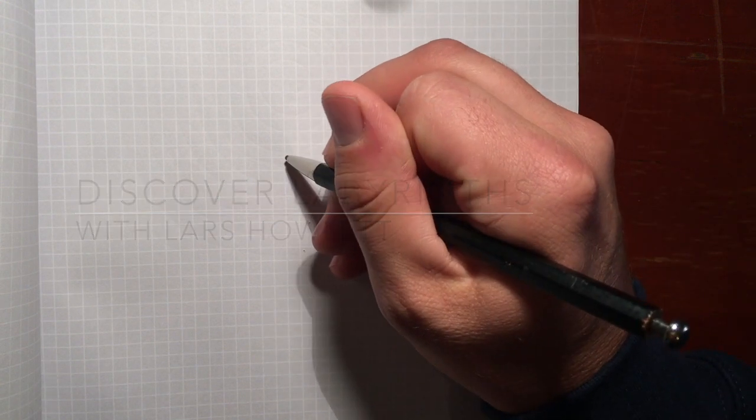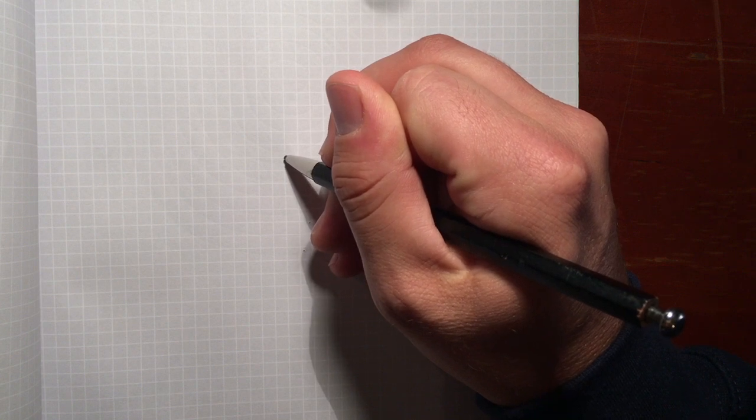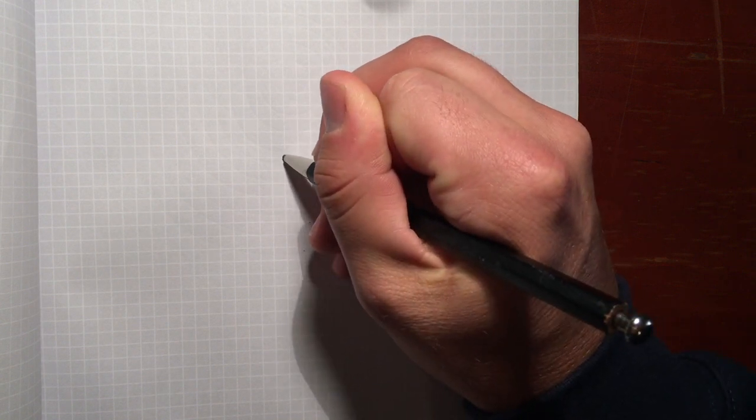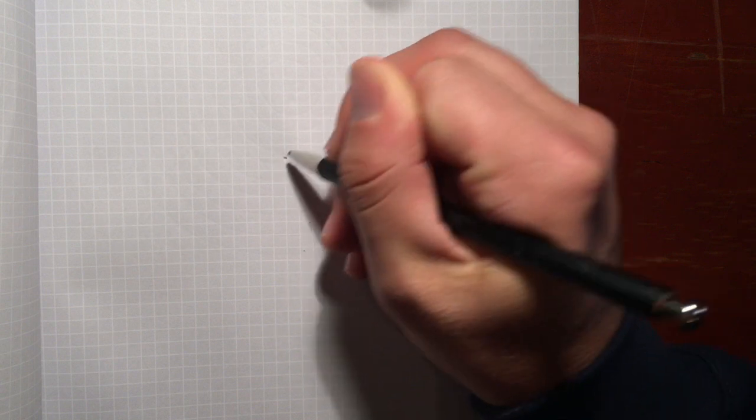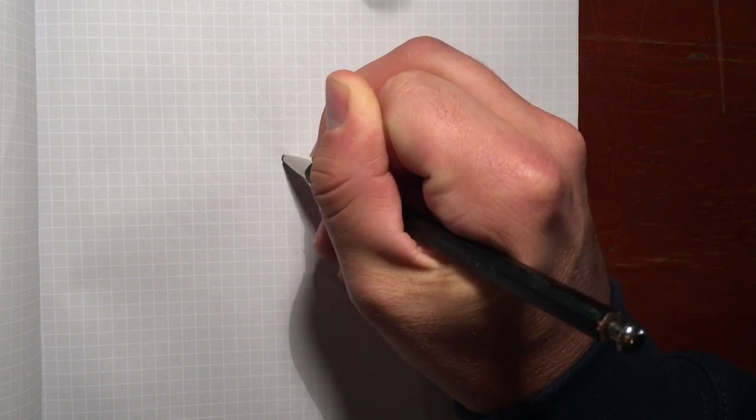So basically you just create a spiral. I'm going to freehand it. Let's see, we're going to put the pin down and we're going to count one where the pin touches the ground.